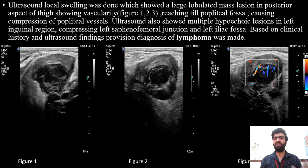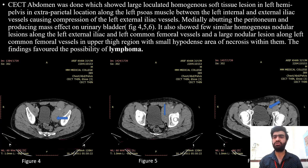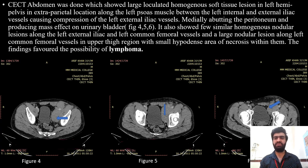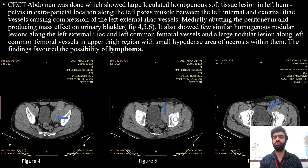Based on the clinical history and USG findings, a diagnosis of lymphoma was made. CT abdomen was done which showed large loculated homogenous soft tissue lesions in the left hemipelvis in an extra-peritoneal location along the left psoas muscle, between the left internal and external iliac vessels, causing compression of the left external iliac vessels, medially abutting the peritoneum and producing mass effect on the urinary bladder. It also showed few homogenous nodular lesions along the left external iliac and left common femoral vessels, with small hypodense areas of necrosis within them.